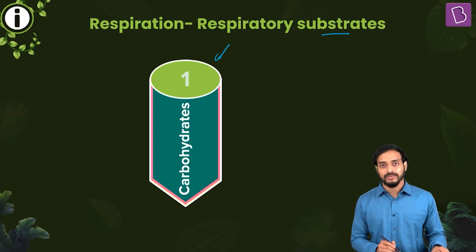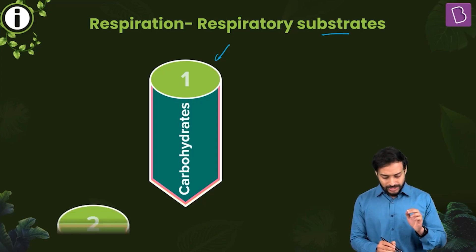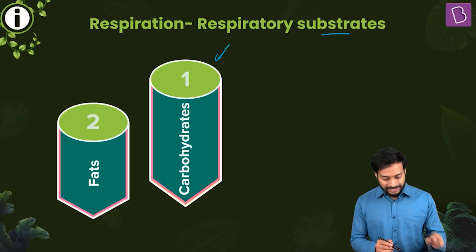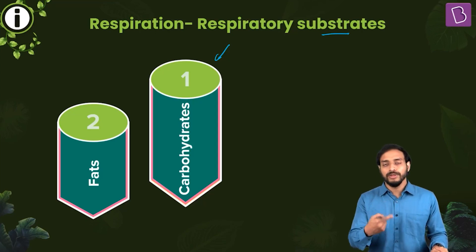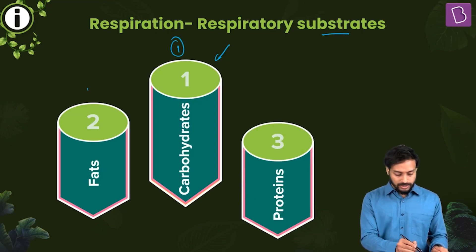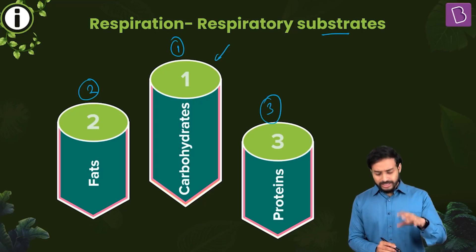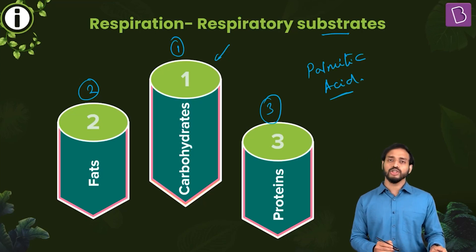At times when your body is lacking carbohydrates, your body will start utilizing fats. Please note: if both fats and carbohydrates are present in your body, carbohydrates will be utilized first, then fats, and after that proteins. So the rank is: rank one carbohydrates, rank two fats, rank three proteins. Apart from these, certain organic acids like palmitic acid are also used as substrates.